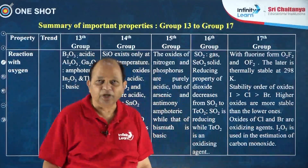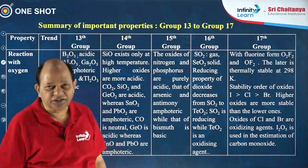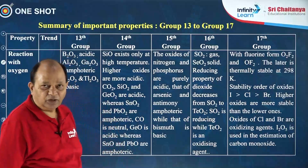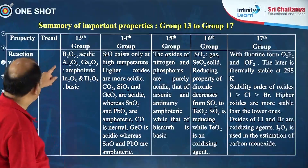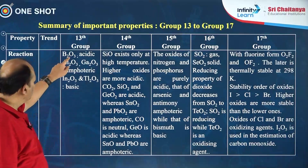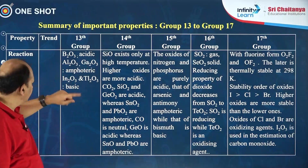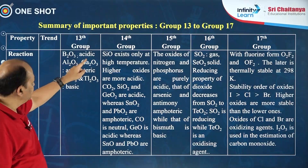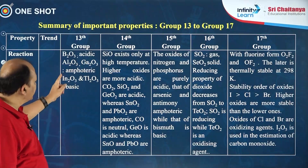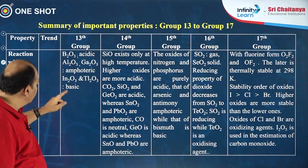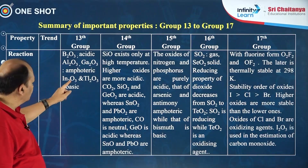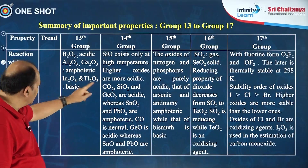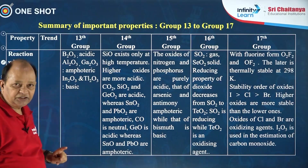The next important property is reaction with oxygen. For group 13, B2O3 is acidic; Al2O3 and Ga2O3 are amphoteric; In2O3 and Tl2O3 are basic.